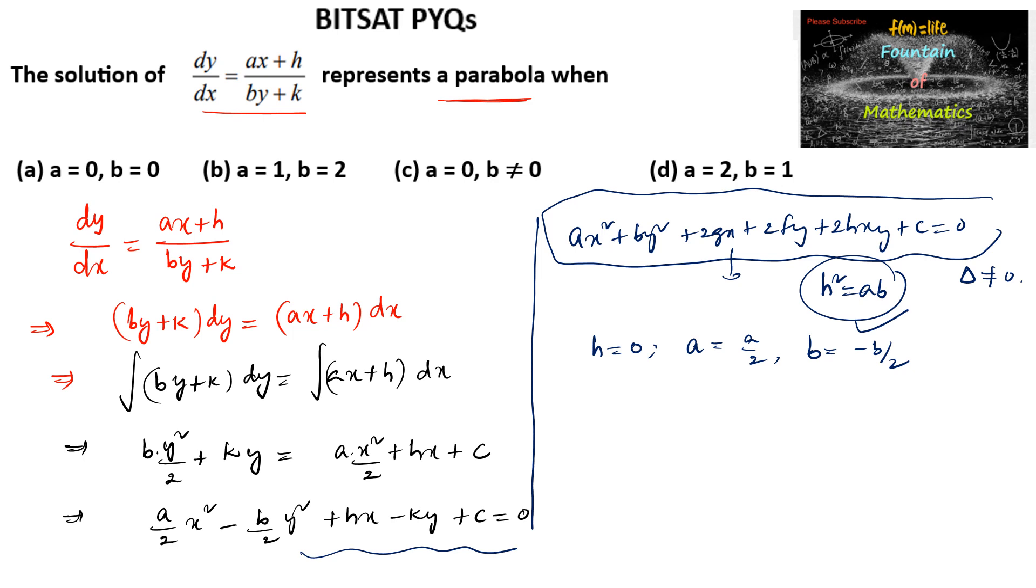Since h square is ab, so a upon 2 into minus b upon 2 is equal to 0, which implies ab is equal to 0. Either a is equal to 0 or b is equal to 0. Any one of them can be 0 or both can be 0.